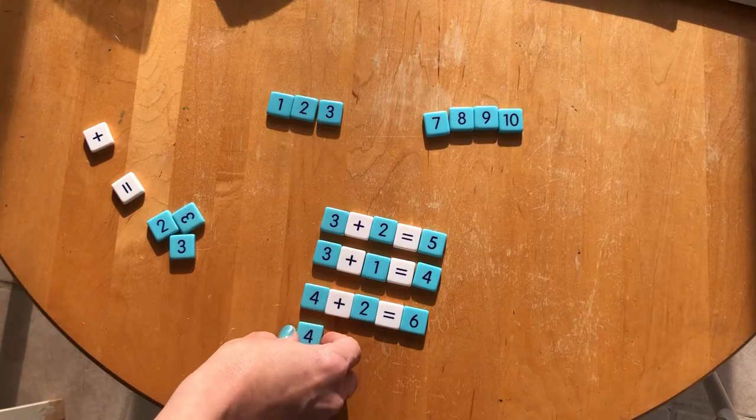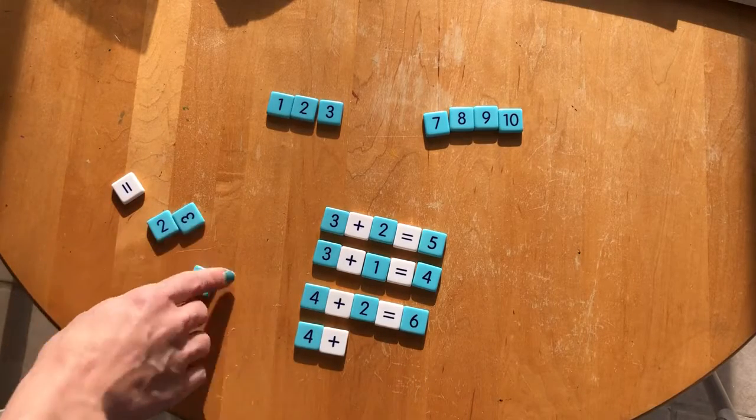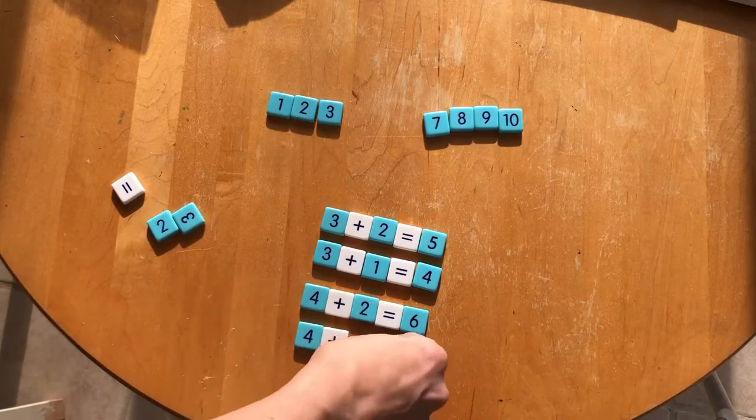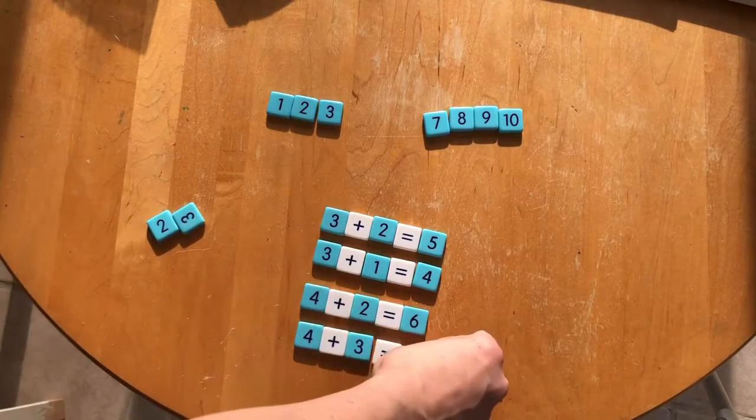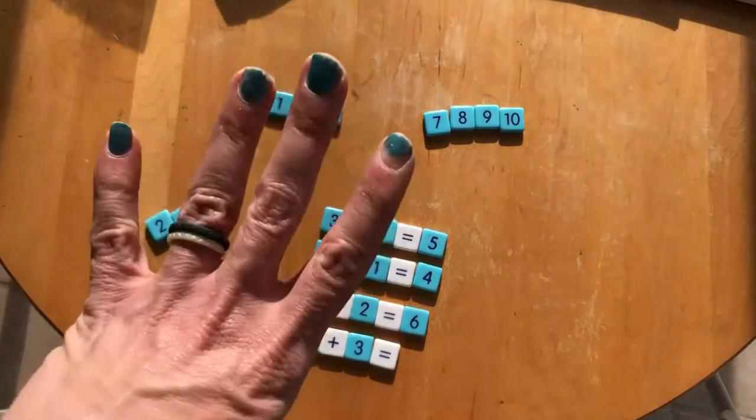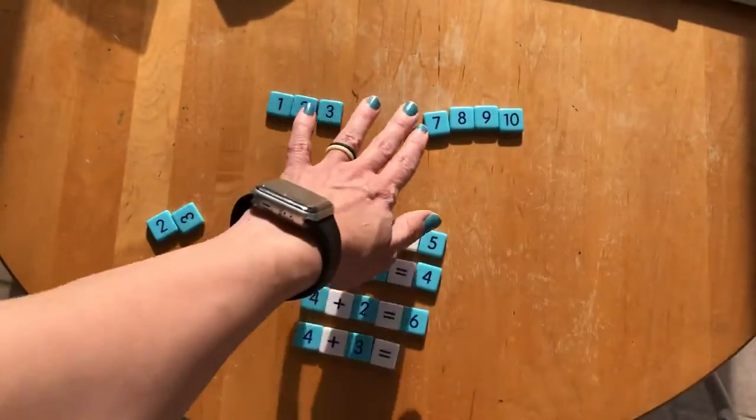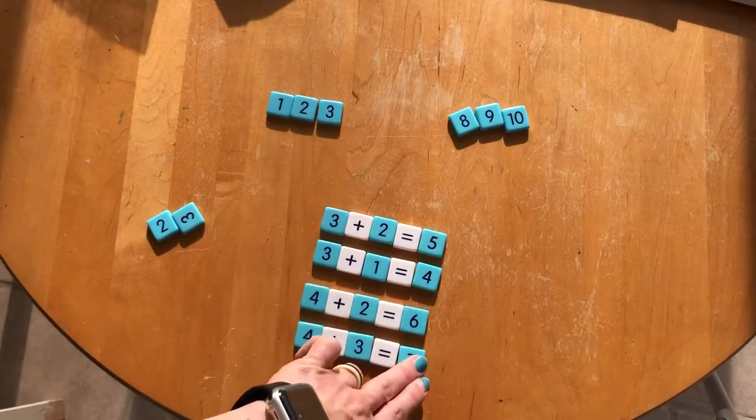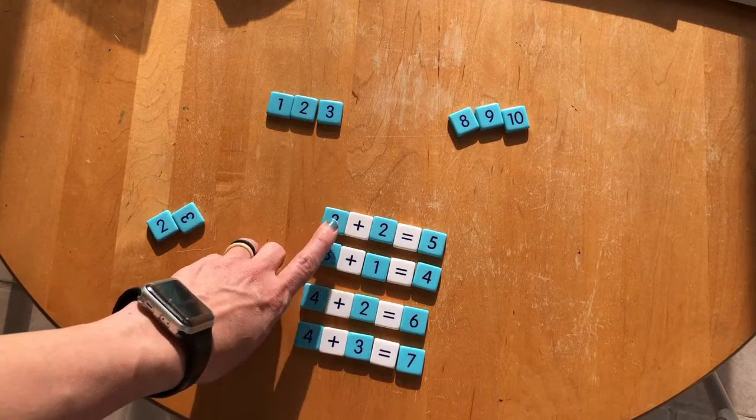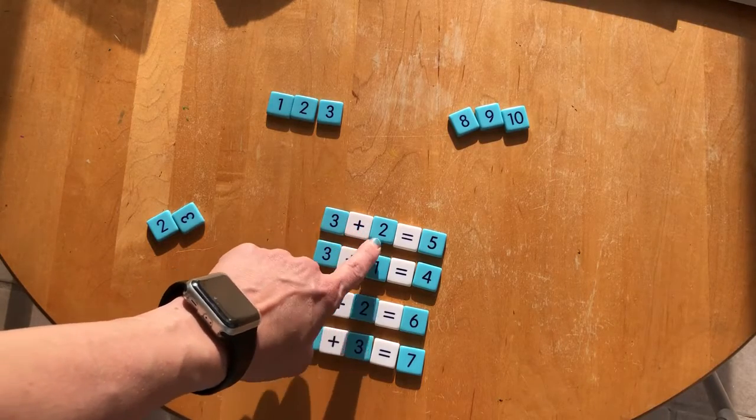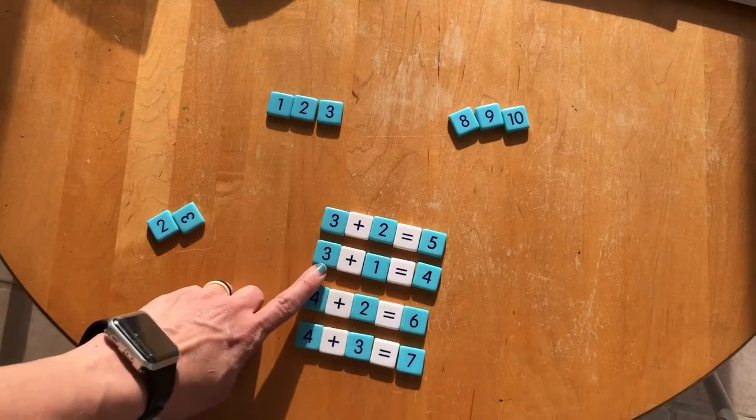Four plus three equals... four, five, six, seven. Seven. So we're going to read these together: three plus two equals five, three plus one equals four...